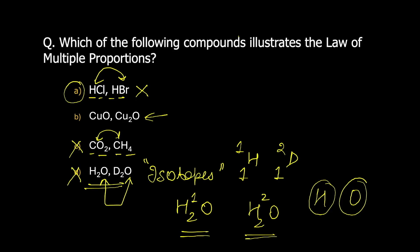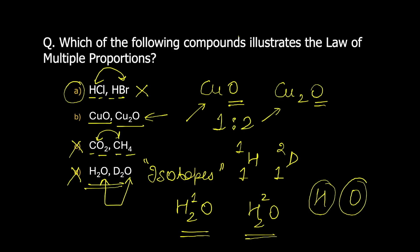The only option we are left with is option B. We have two compounds — CuO and Cu₂O — both made up of copper and oxygen. If we fix the masses of oxygen and check the masses of copper, they will be in a simple whole number ratio of 1 is to 2. So B is the correct answer, as the law of multiple proportions is applicable here.